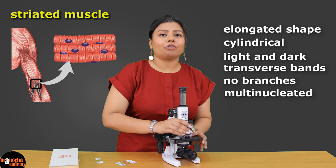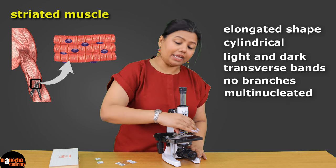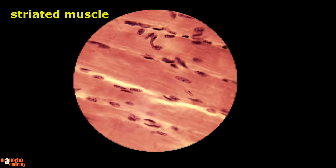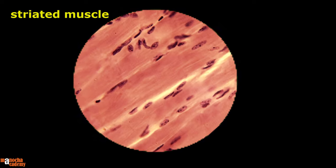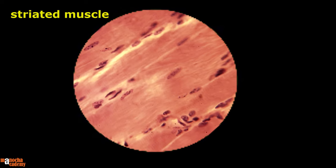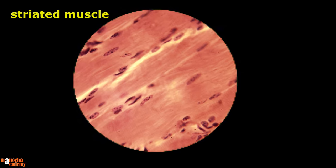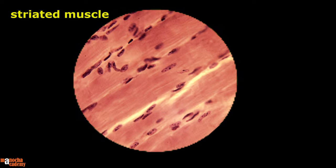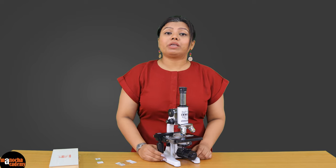Let us see how they look at 100x magnification. This is how it looks at 100x. Now moving to 450x magnification — you can clearly see the cells. The cells are not branched, unlike the cardiac muscles. So those were the three muscle cells.